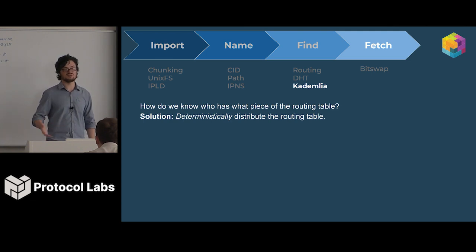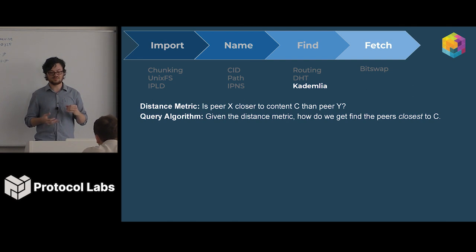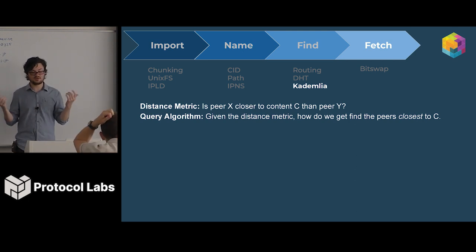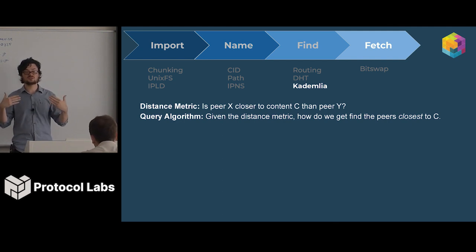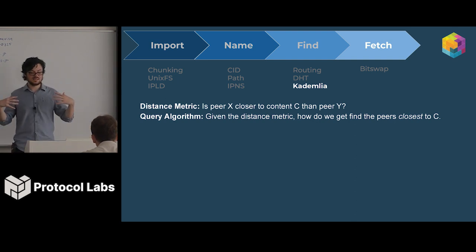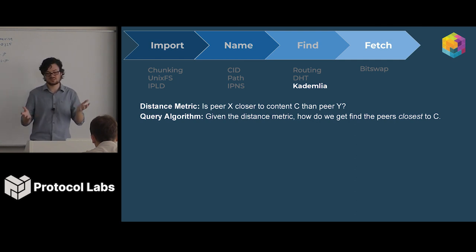Kademlia is based on two key features: a distance metric and a query algorithm. The distance metric lets you say is this peer closer to some piece of content? You have some piece of content C, and peers X and Y — it tells you which peer is closer. The query algorithm allows you to use the distance metric to get to the peers that are closest to the content. It's kind of like having a compass that points to the content, and the algorithm tells you how to walk to it.